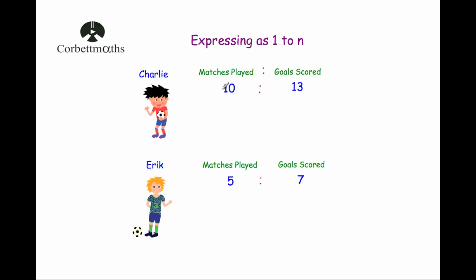These two ratios — 10 to 13 and 5 to 7 — are both already simplified. They can't be simplified any further because 10 and 13 have no common factors apart from 1, and 5 and 7 have no common factors apart from 1. What we can do is write them in the format 1 to n, making the number at the front equal to 1 for both Charlie and Eric.